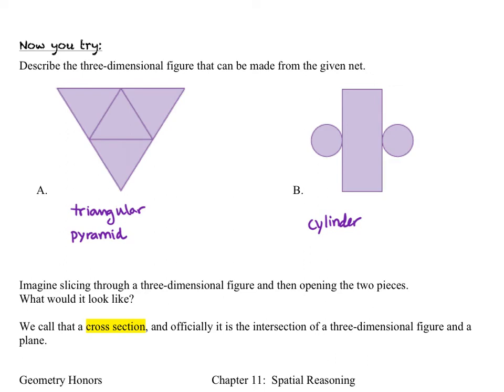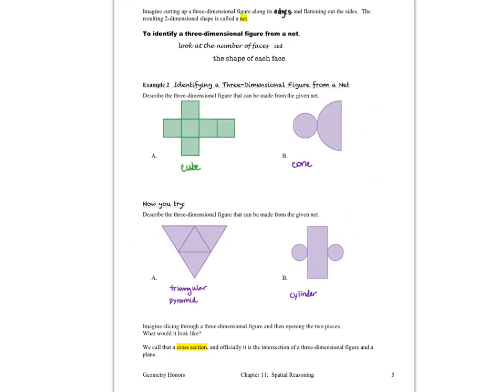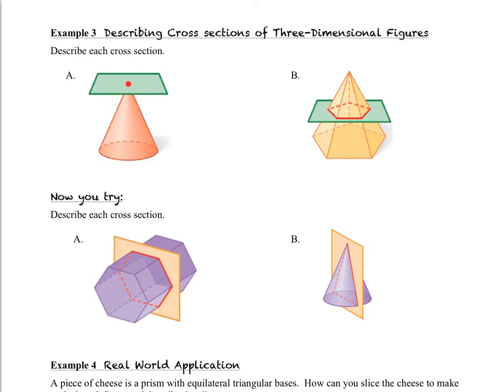Imagine slicing through a three dimensional figure and then opening the two sides. What would it look like? We call that a cross section and officially or formally it's defined as the intersection of a three dimensional figure and a plane. In example three we want to be able to describe the cross section of the three dimensional figure based on where the cross section is, where the plane cuts through the three dimensional figure. You can see in question A we have a cone and the plane is cutting through only at the vertex and that means that we're going to see only a point. Now if that plane had cut through the cone lower somewhere we would, and we slice through that, we would see a circle. But that is not what happened in question A. Let's take a look at question B. We can see the plane is cutting through that pentagonal pyramid and where the plane cuts through we end up seeing a pentagon.